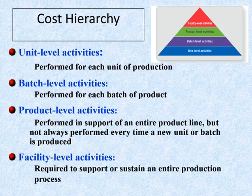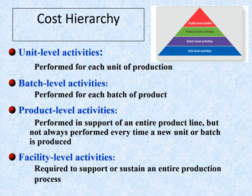Traditional costing systems are volume-driven, driven by unit-based cost drivers such as direct labor or machine hours. Some activity costs are strictly variable and are caused by the production or acquisition of a single unit or product. However, there are other activity costs not driven by unit-based cost drivers, which has led to the development of a classification of ABC activities consisting of four levels: unit, batch, product, and facility.